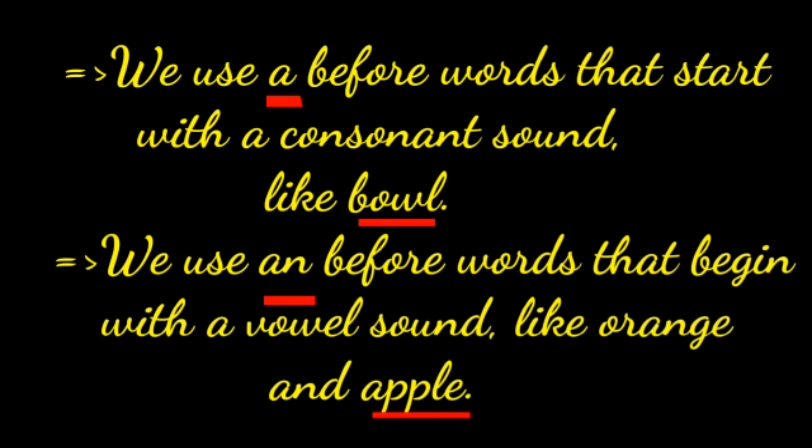We use an before words that begin with a vowel sound, like 'orange' and 'apple'. So: words starting with a consonant sound — use a; words starting with a vowel sound — use an.